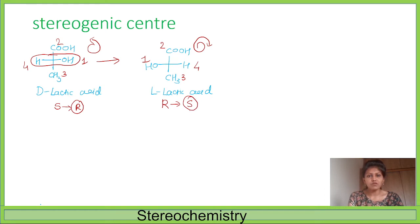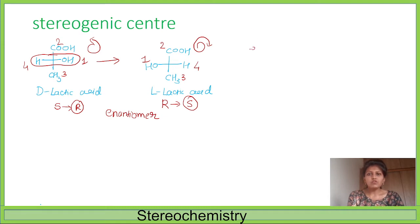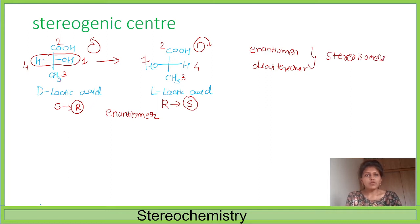So here we can say one has R configuration and one has S configuration. Therefore both are enantiomers. Enantiomers and diastereomers are stereoisomers. We can say that if the positions of two substituents are interchanged, it will give a new stereoisomer — R becomes S or S becomes R.